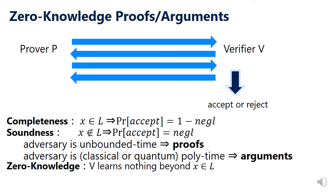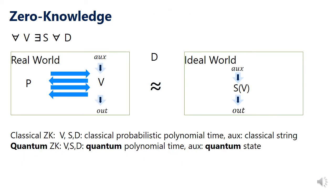I will explain a more formal definition of the zero-knowledge property. The zero-knowledge property is defined like this: for any verifier, there exists a simulator such that for any distinguisher, the distinguisher cannot distinguish these two worlds. In the real world, the verifier interacts with the honest prover. In the ideal world, the simulator simulates the verifier's view. When we consider classical zero-knowledge, everything is classical, and when we consider quantum zero-knowledge, everything is quantum.